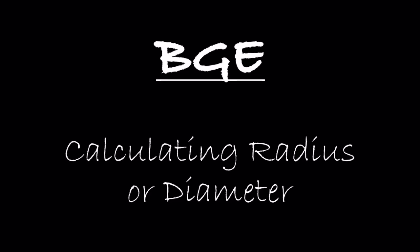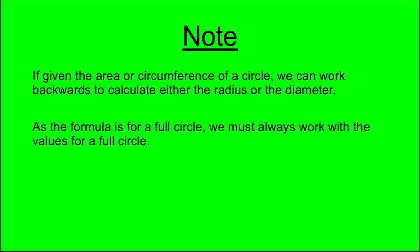This lesson will focus on calculating the radius or diameter from the circumference or area of a circle. If given the area or circumference of a circle, we can work backwards to calculate either the radius or the diameter. As the formula is for a full circle, we must always work with the values for a full circle.